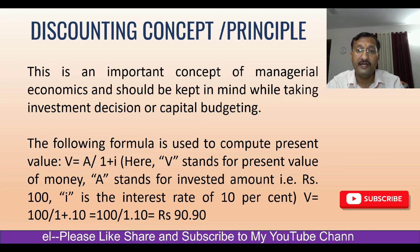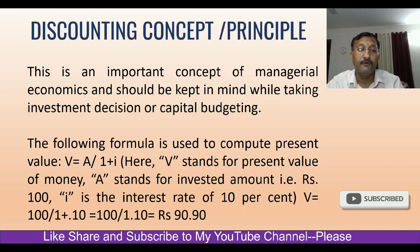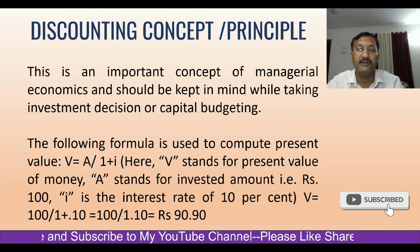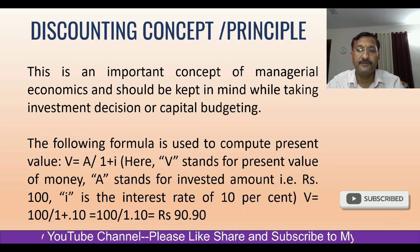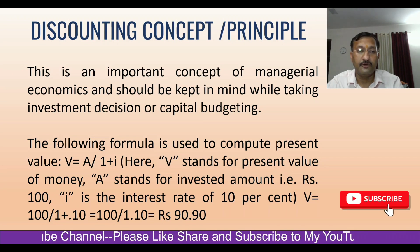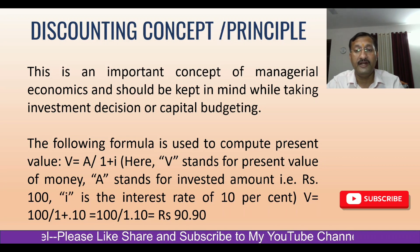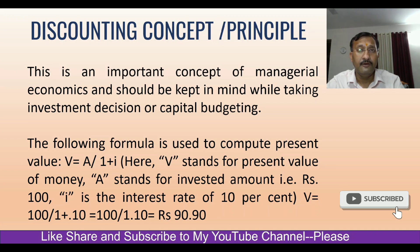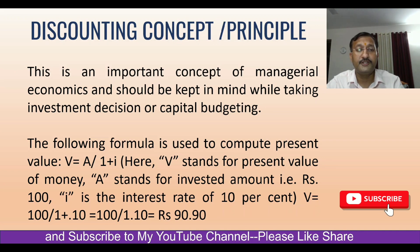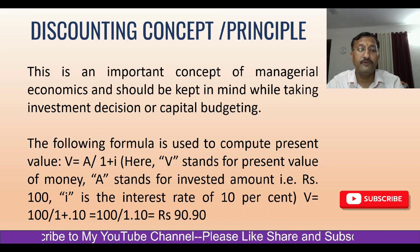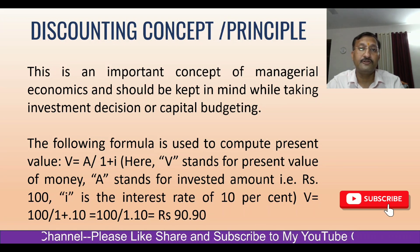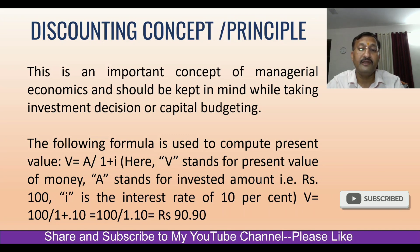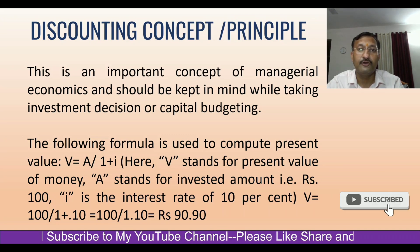We can use the following formula to compute present value: V = A / (1 + i). Here, capital V stands for the present value of money, capital A stands for the invested amount such as 100 rupees, and i is the interest rate of 10%. So V = 100 / (1 + 0.10) = 100 / 1.10, which equals 90.90 rupees. So whatever 100 rupees you will be getting tomorrow, its present value is 90.90 rupees today.